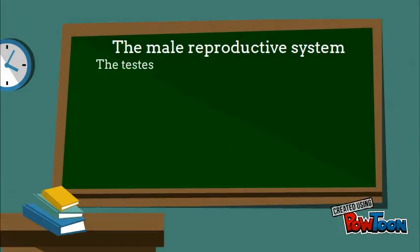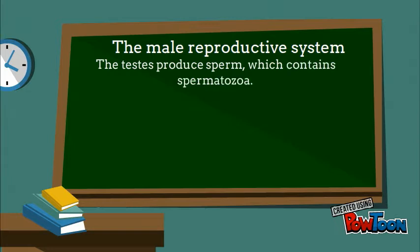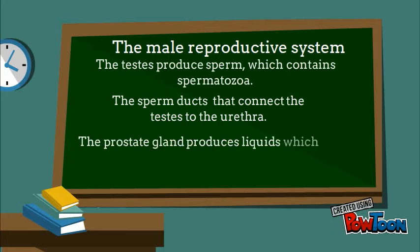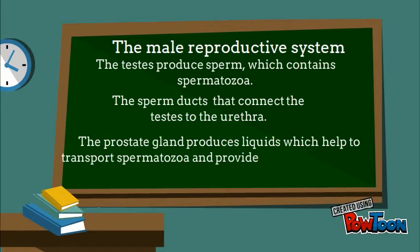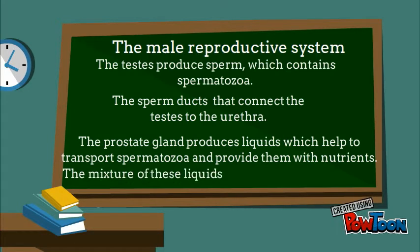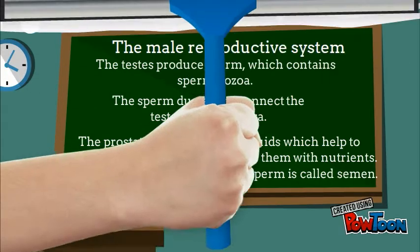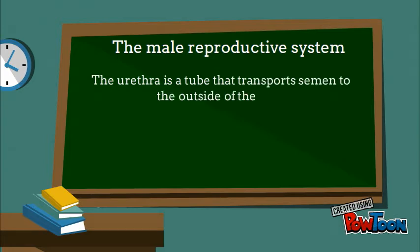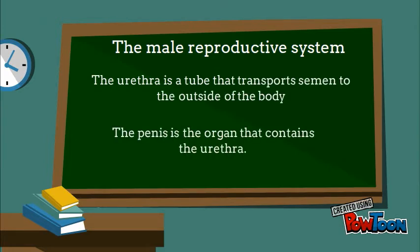Parts of the male reproductive system. The testes produce sperm, which contains spermatozoa. The sperm ducts connect the testes to the urethra. The prostate gland produces liquids which help to transport spermatozoa and provide them with nutrients. The mixture of these liquids and sperm is called semen. The urethra is a tube that transports semen to the outside of the body, and the penis is the organ that contains the urethra.